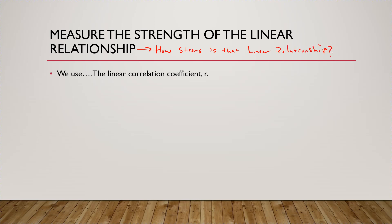Basically, we want to compute a number, and the value of that number will tell us how strong the linear relationship is — whether it looks really almost like a straight line, or whether you can kind of see the pattern but it's not very strong. There's a difference in the strength, and I'll show that with some different scatter plots. To measure the strength, we use what's called the linear correlation coefficient, and this value is called r.